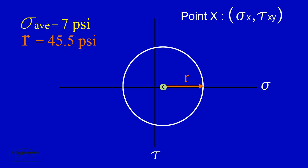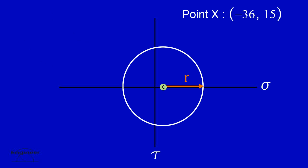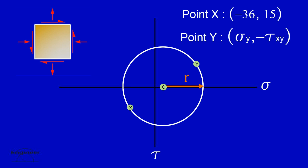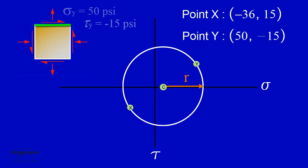Plot points X and Y on the graph. Point X is the point on the circle representing the stress conditions on the x-face of the element when theta equals 0. Point Y is the point on the circle representing the stress conditions on the y-face of the element. Notice that the circle passes through both points.